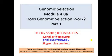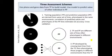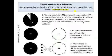Welcome to Module 4 of Genomic Selection. In this module we're going to investigate whether genomic selection is working or not using references in the literature. There are three basic assessment schemes to see whether genomic selection is working, and this figure is derived from Salam et al. In each of these schemes you use phenotypic and genotypic data from a training population to build a model, and you use that model to predict the values of individuals in a prediction population.